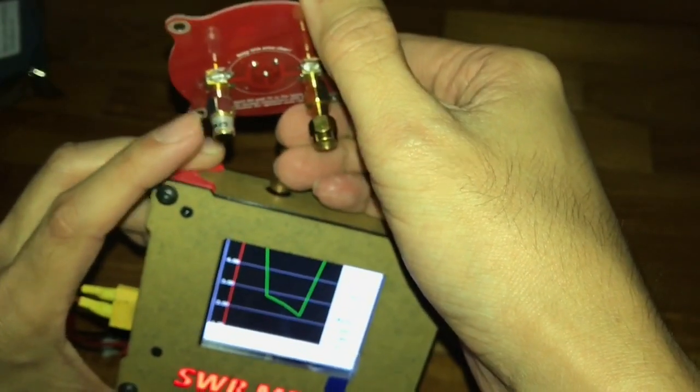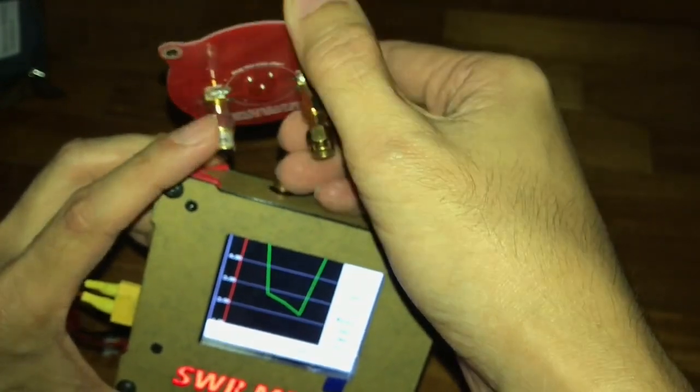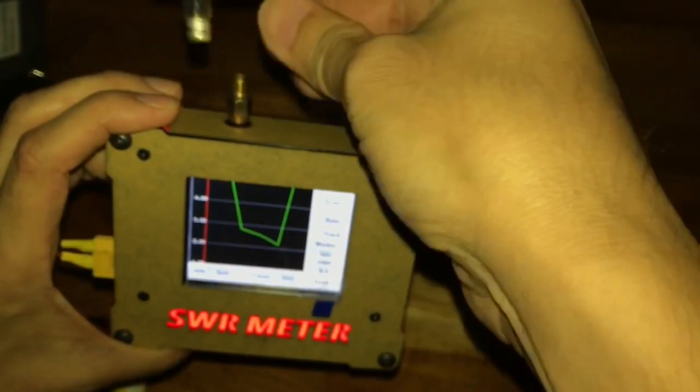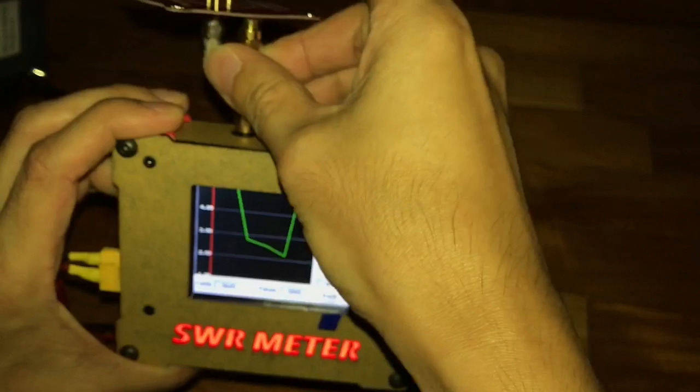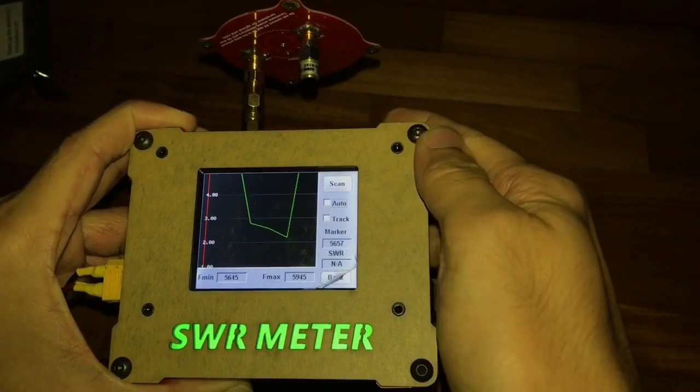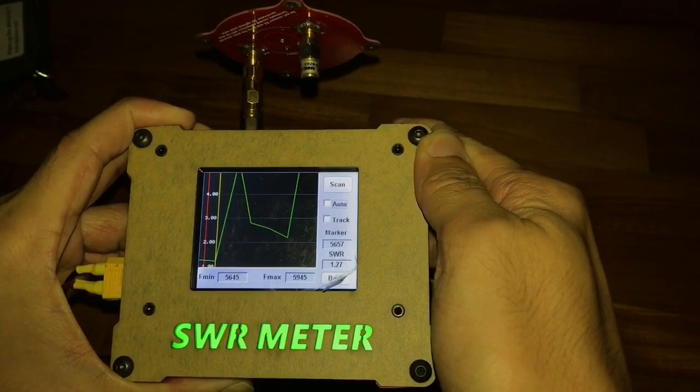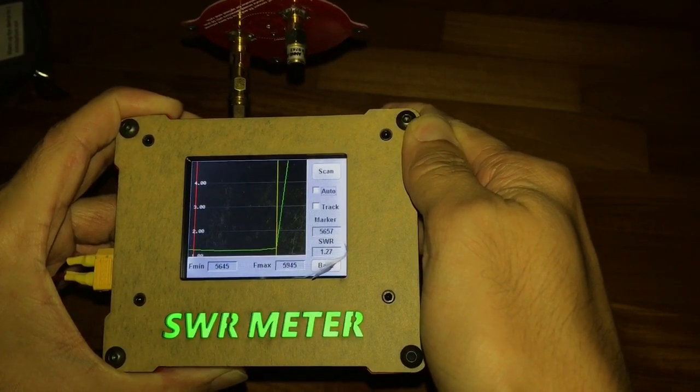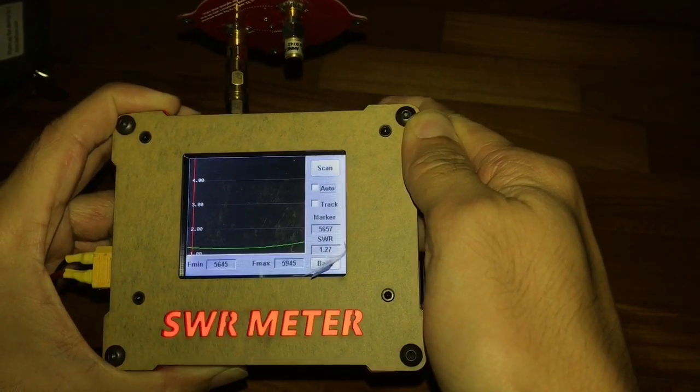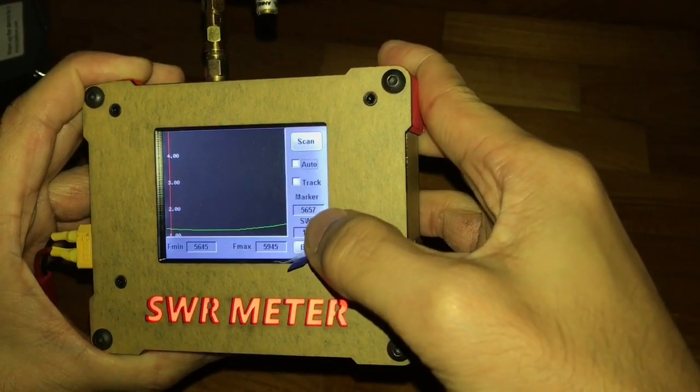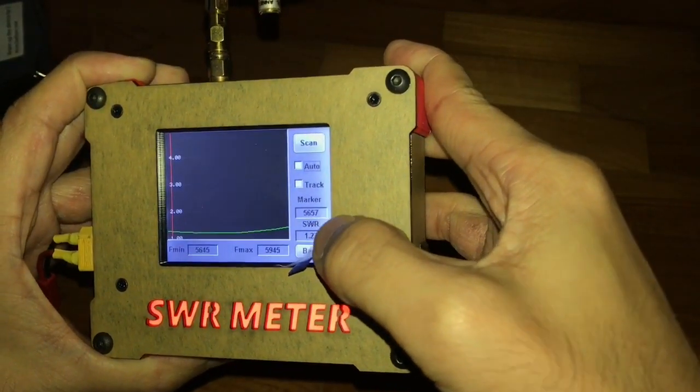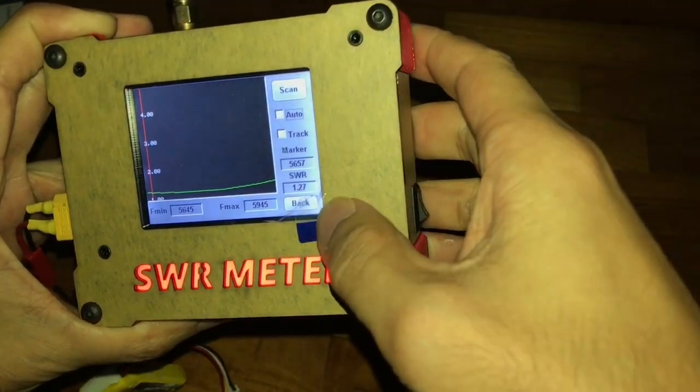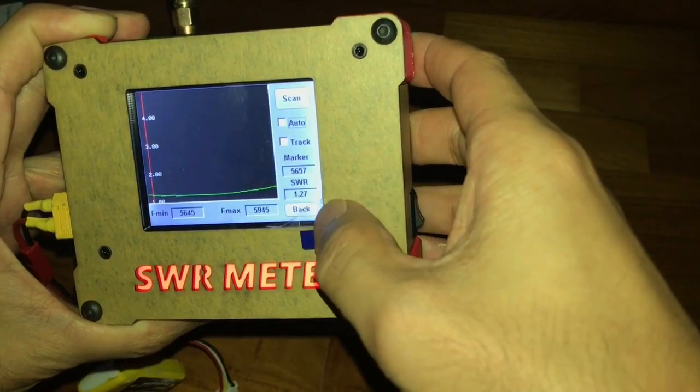They say that without the termination of 50 ohms here, you will not get good performance out of this antenna. And I have that. So, let's plug it in. So the marker is 5.657. That's the frequency that you get the best VSWR. VSWR is 1.27.